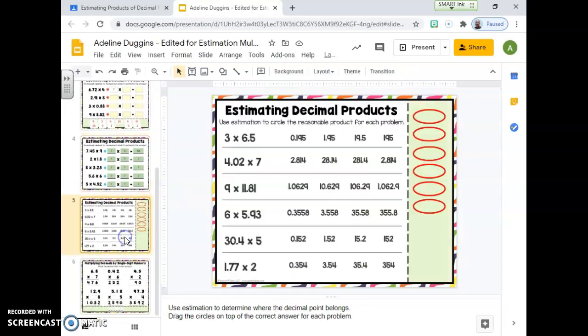Next slide, use estimation to circle the reasonable product. You'll notice that all these digits are the same. The only thing that has changed is the location of the decimal point. Changing the location of the decimal point goes from here we have one hundred ninety-five thousandths onto one hundred and ninety-five. Three times six and five tenths. Again, I can think of money, three times six dollars and fifty cents. Would that be closer to one hundred ninety-five thousandths, one and ninety-five hundredths, nineteen and five tenths, or one hundred and ninety-five? I would click and drag here. Three times six is close to eighteen, so three times six and a half, that's going to be a little bit more than eighteen because six and a half is a little bit more than six.